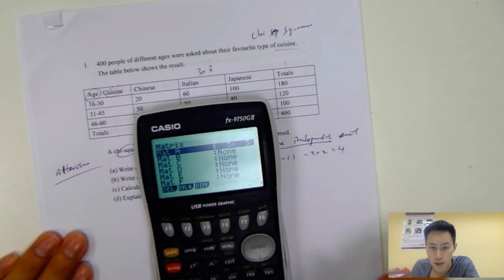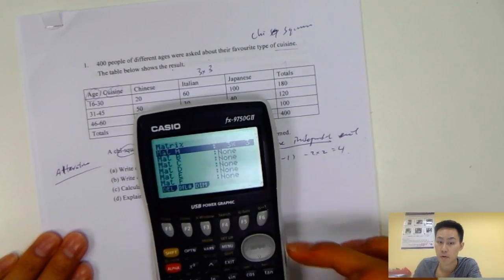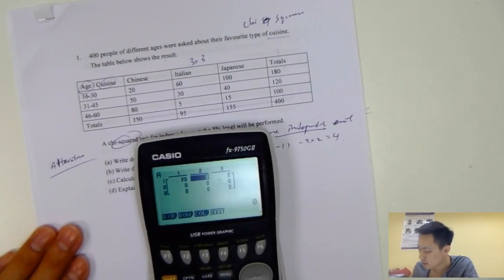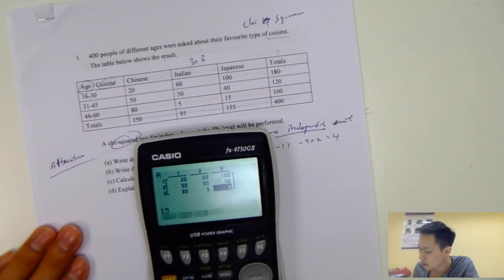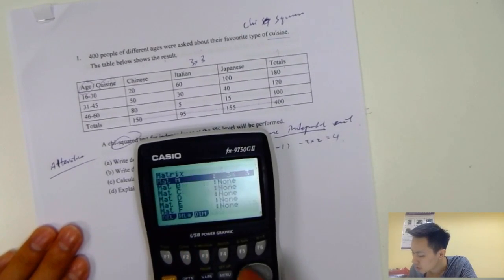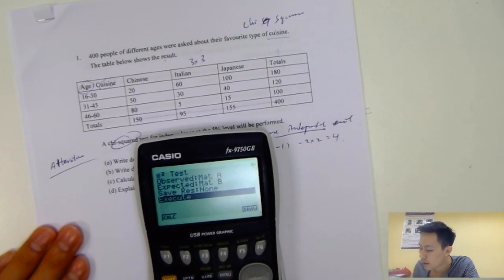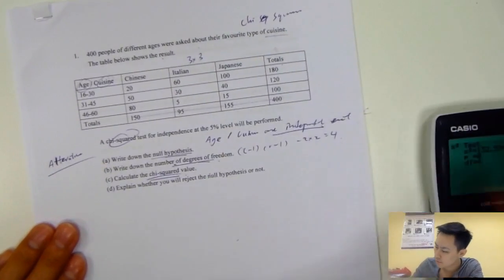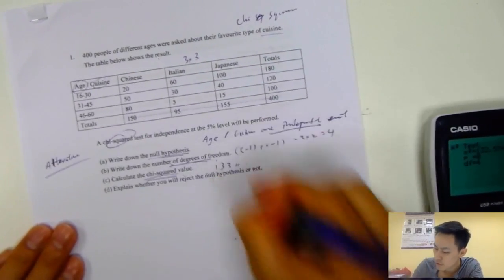Change it to three by three, press enter. Type in the numbers: 20, 60, 100, 50, 30, 40, and then 80, 5, and 15. Then we go out and calculate, execute. You get the chi-squared test value, which is 133.